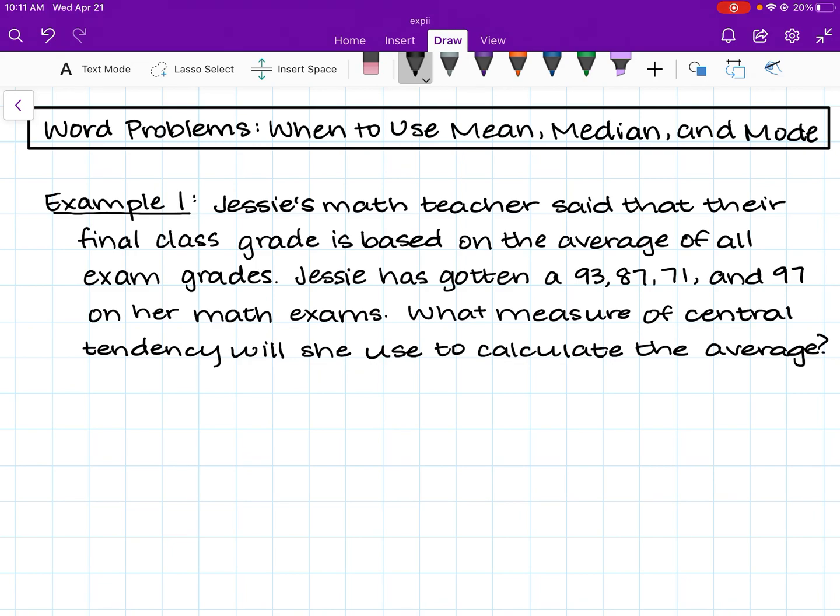Example problem number one. Jesse's math teacher said that their final class grade is based on the average of all exam grades. Jesse has gotten 93, 87, 71, and 97 on her math exams. What measure of central tendency will she use to calculate the average? So take a second, pause, and figure out what measure of central tendency that Jesse will use.